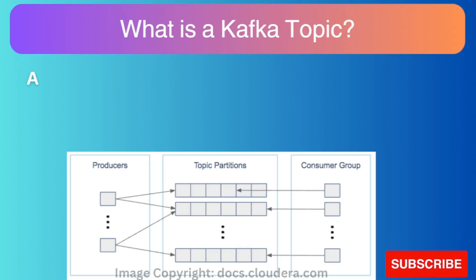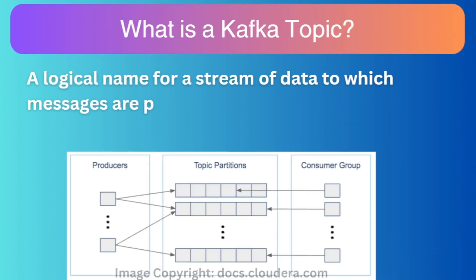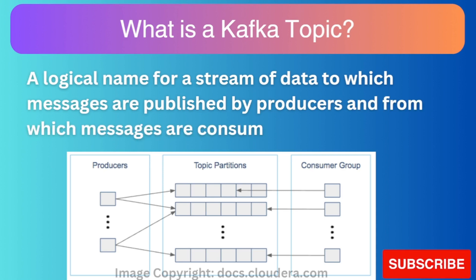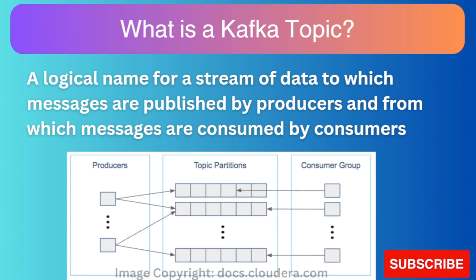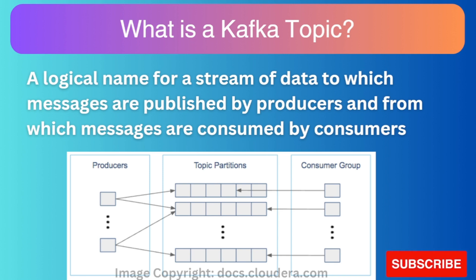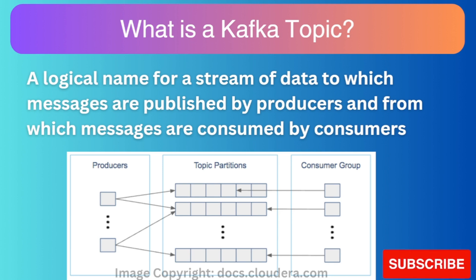The next follow-up question could be: what is a Kafka topic? In Kafka, messages come as a stream of data. A topic is a logical name for that stream of data in which messages are being published. Suppose you have an e-commerce application and you want to group together the messages related to order status. You can create a topic named 'order status topic,' and the service responsible for updating the status of orders will act as a producer to that topic, producing a message every time there is a change in the status of any order.